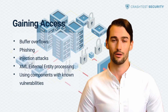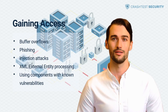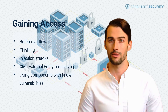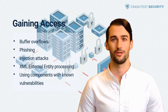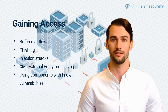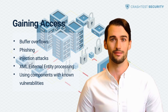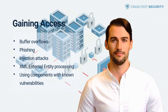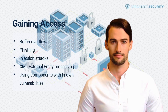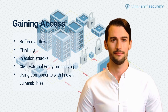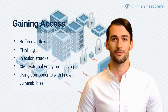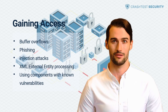Once ethical hackers expose vulnerabilities through the first and second hacking phases of the process, they now attempt to exploit them for administrative access. The third phase involves attempting to send a malicious payload to the application through the network, an adjacent subnetwork, or physically using a connected computer. Hackers typically use a number of hacking tools and techniques to simulate attempted unauthorized access, including buffer overflows, phishing, injection attacks, XML external entity processing, and using components with known vulnerabilities. If the attacks are successful, the hacker has control of the whole or part of the system and may simulate further attacks, such as data breaches and distributed denial of service.